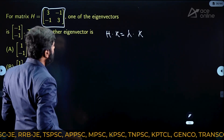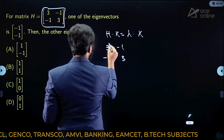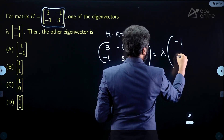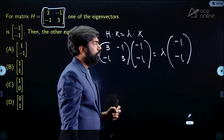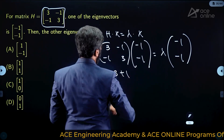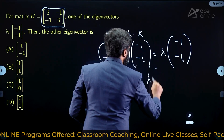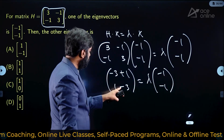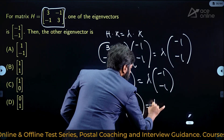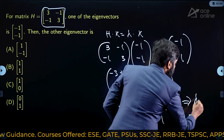So H = [[3, -1], [-1, 3]] multiplied by (-1, -1) must equal λ(-1, -1). Computing: row 1 gives -3 + 1 = -2, row 2 gives 1 - 3 = -2. This equals 2 × (-1, -1), so λ = 2.